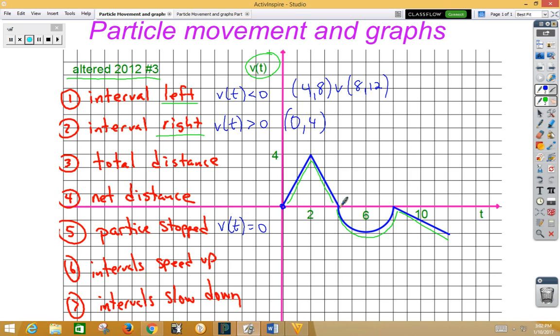The particle stops when velocity is equal to 0. We can see that the particle is equal to 0 at 0, 4, and 8. So time 0, 4, and 8 would be when the particle has stopped.